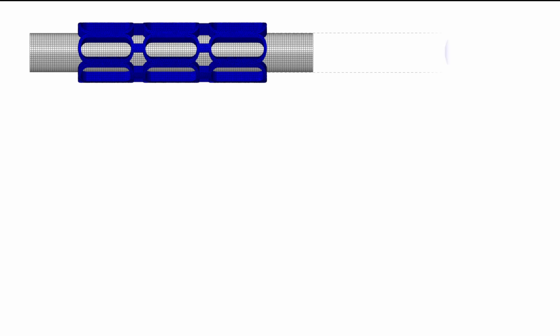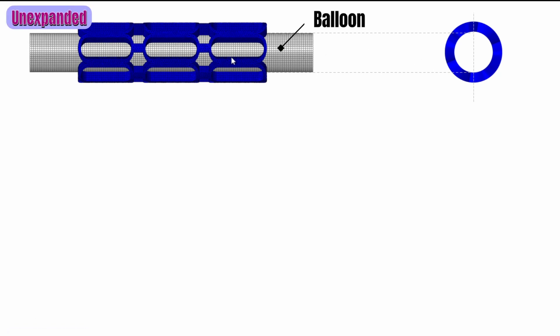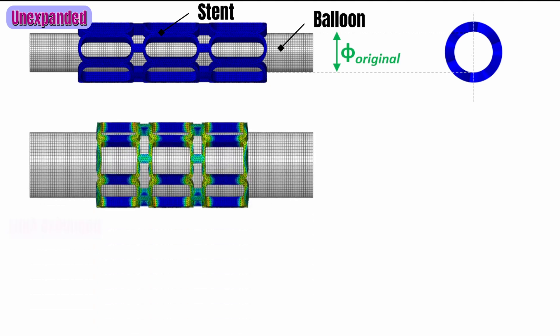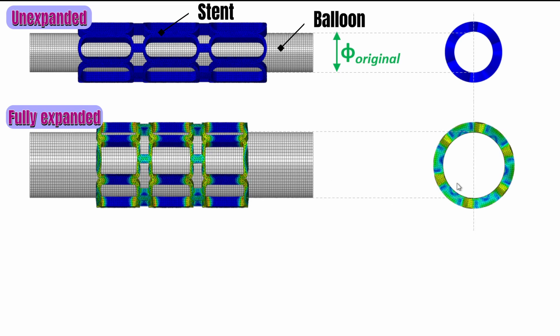In the original configuration of the stent when it's unexpanded — with the balloon shown and the stent material in blue — we find the internal diameter, which defines our original diameter. The second stage of deformation is when it is fully expanded, and the internal diameter becomes phi expanded, representing the expanded diameter of the stent.